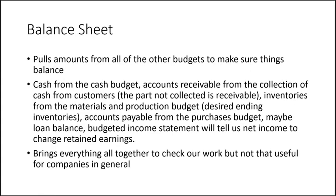Finally, we pull together a balance sheet to check that everything works — drawing amounts from all the other budgets to make sure things balance. There are no new calculations here. Cash comes from the cash budget; accounts receivable is the portion of sales not yet collected — for example, if you collect 60% of June sales in June, the other 40% is still in accounts receivable at month-end. Inventory figures come from desired ending inventory on the production and direct materials purchases budgets.